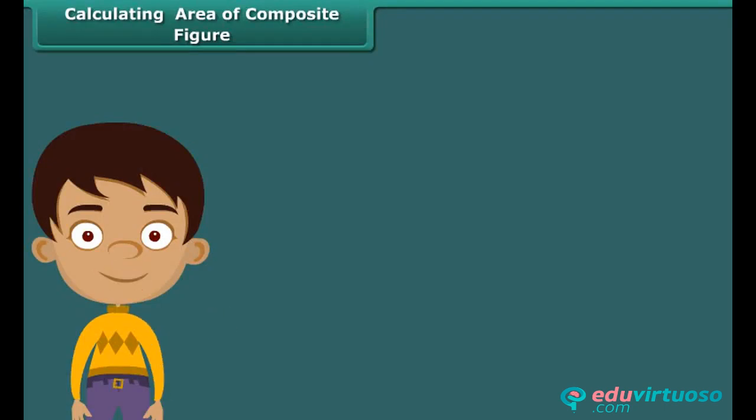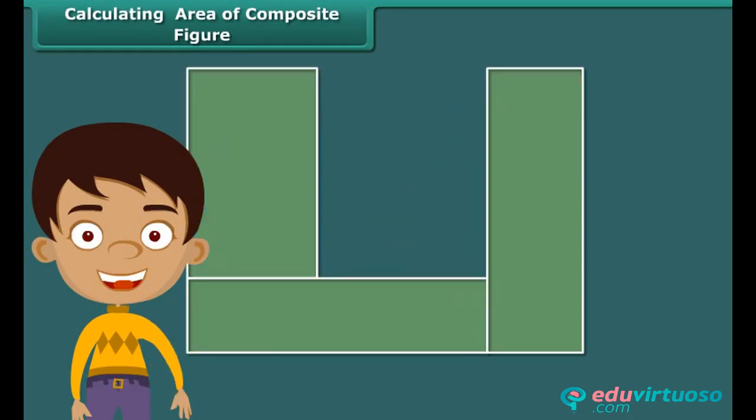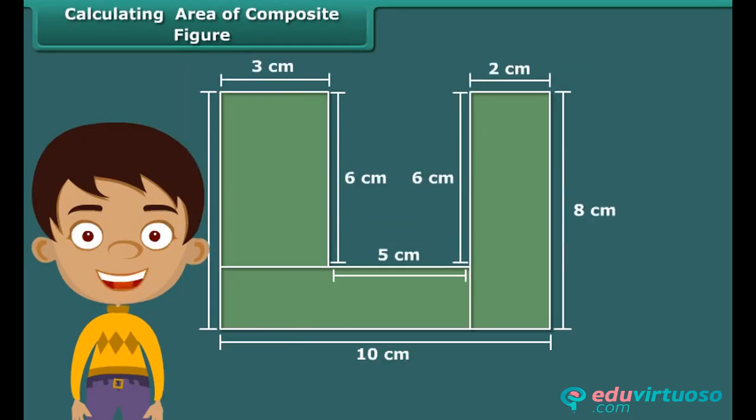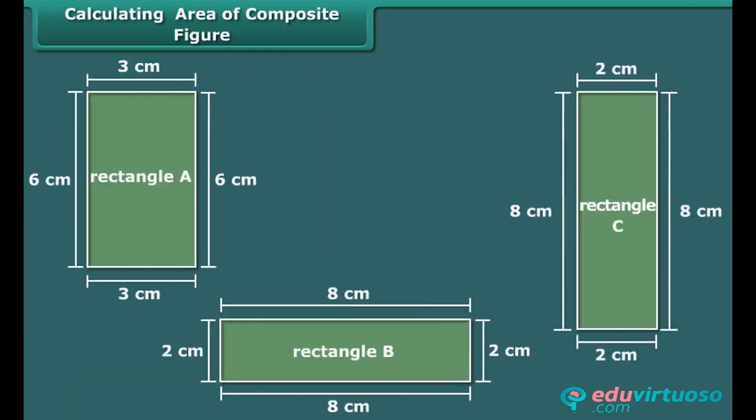First, break the composite figure into individual rectangles. Calculate the area of each rectangle. Sum up the areas of all the rectangles to find the area of the composite figure.